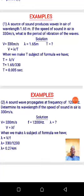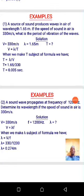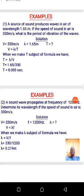Example one: a source of sound — say a loudspeaker — produces waves in air of wavelength 1.65 meters. The distance from one crest to the next, or one trough to the next, is 1.65 meters. If the speed of sound in air is 330 meters per second, what will be the period of vibration of such a wave?